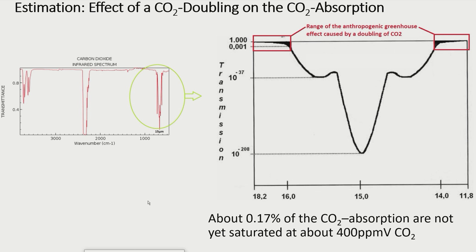Heinz Hug estimates, based on his measurements, that about 0.17% of the CO2 absorption is not yet saturated at about 400 ppmv CO2. According to the IPCC, CO2 currently in the atmosphere should cause back radiation of about 32 watts per square meter. With Hug's estimate of 0.17% unsaturated CO2 absorption for a doubling of atmospheric CO2, the IPCC's figure of 4 watts per square meter would be much too high. An increase of less than 0.05 watts per square meter would fit better to Hug's measurement, bringing the additional warming from a doubling of atmospheric CO2 down to about 0.01 degrees centigrade.